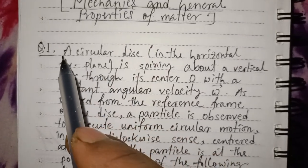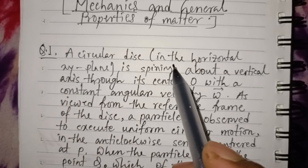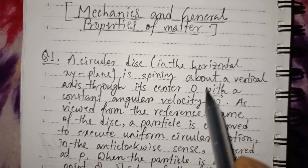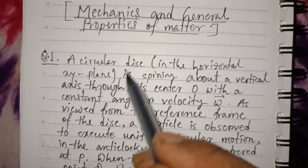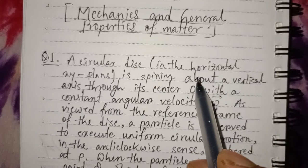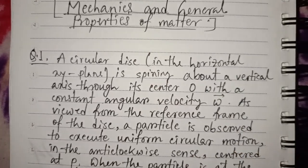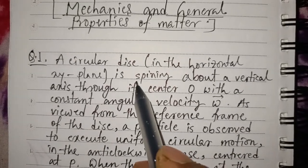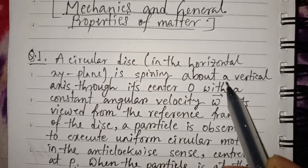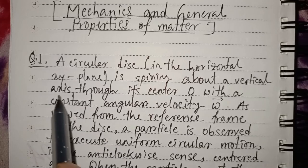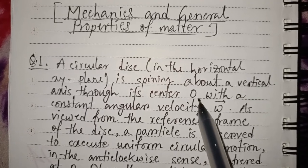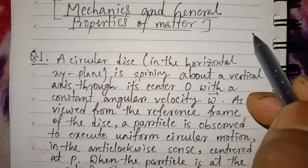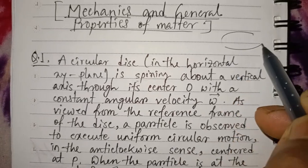The circular disk is in a horizontal xy plane. It is a circular disk — a plate — in a horizontal plane. It is spinning about a vertical axis through its center O.